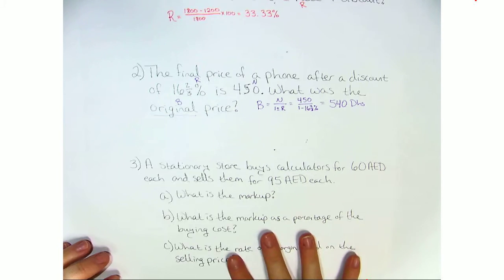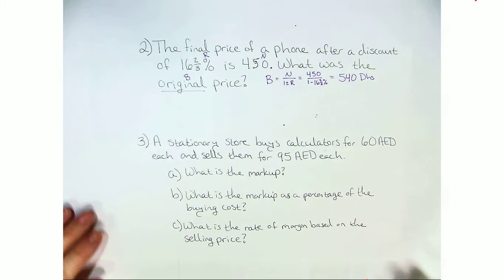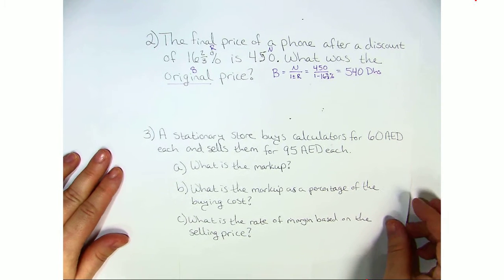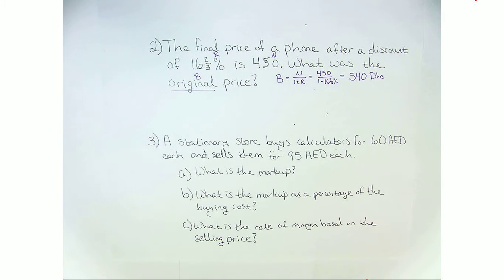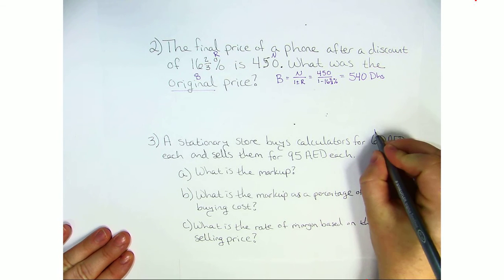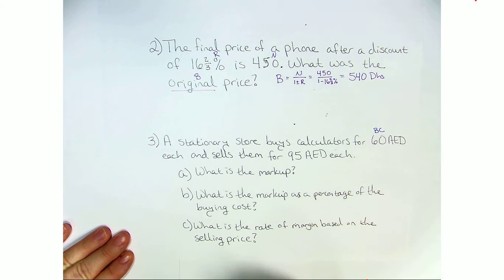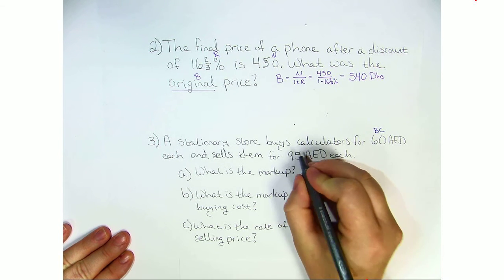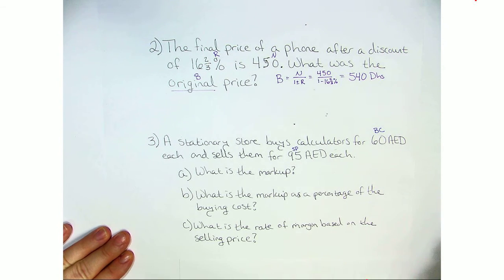Last question for this page. A stationary store buys calculators for 60 dirhams each and sells them for 95 each. What is the markup? So the buying cost is 60 dirhams and the selling price is 95.